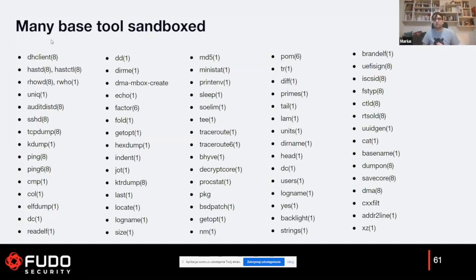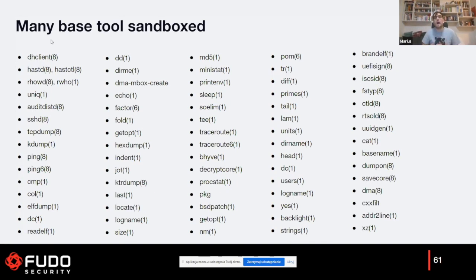In FreeBSD we have over a hundred applications that are already sandboxed. Some interesting examples include SSHD — a very mature and large application — and Bhyve, the FreeBSD hypervisor, which was capsicumized with very simple changes. It's not so hard to use Capsicum, though some things may be a little bit challenging — but it's doable.